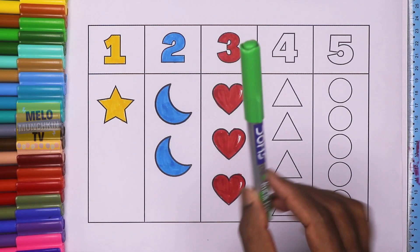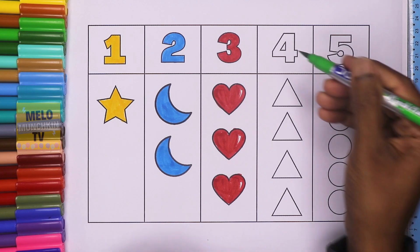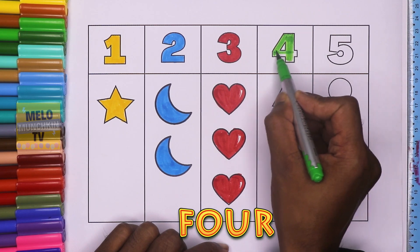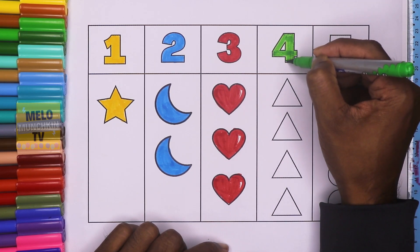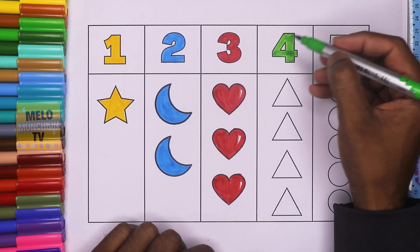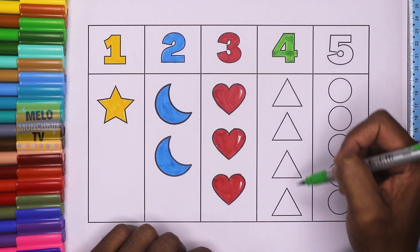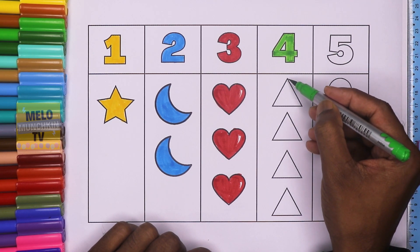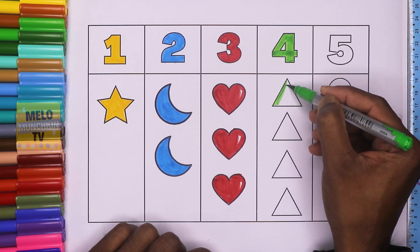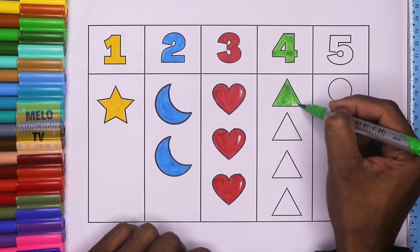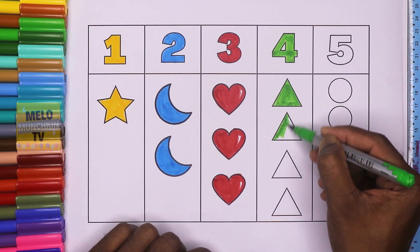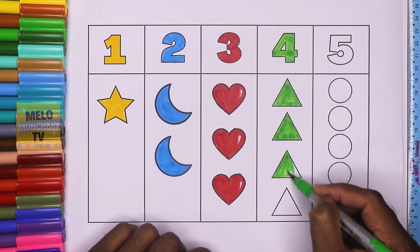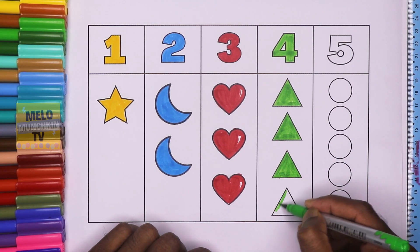Green color. 4. F, O, U, R. 4. 4. Let's color the triangles. The shapes are triangle. It has 3 sides. 1, 2, 3. Let's color it. 1, 2, 3, 4. And 4.